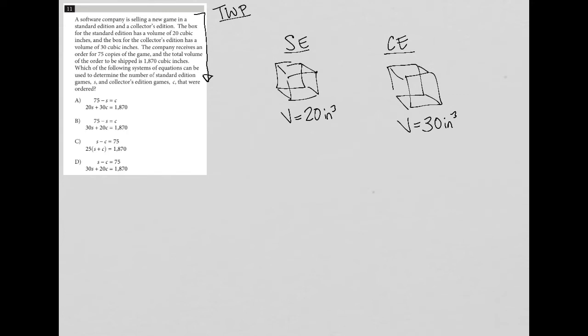Do we know what types of editions each of those orders are? It doesn't seem that we do. And peeking at the answer choices a little bit, I'm going to get rid of this E and just call it S for standard edition. Get rid of this E and just call it C for collector's edition because I see those variables being used here.